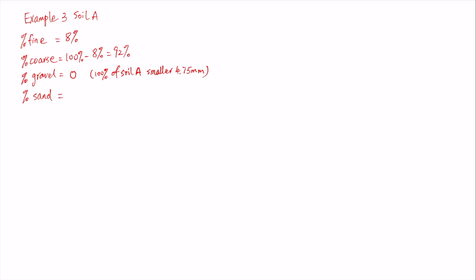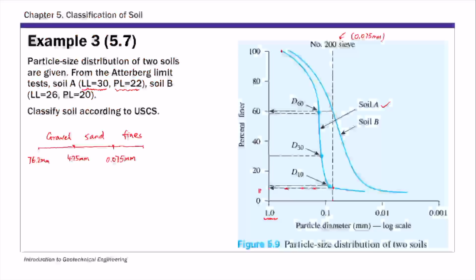The percent of sand is the percent of coarse minus the percent of gravel. For this example that's 92 percent minus 0 percent, giving 92 percent sand. So we have 8 percent fines, 92 percent coarse, 0 percent gravel, and 92 percent sand.